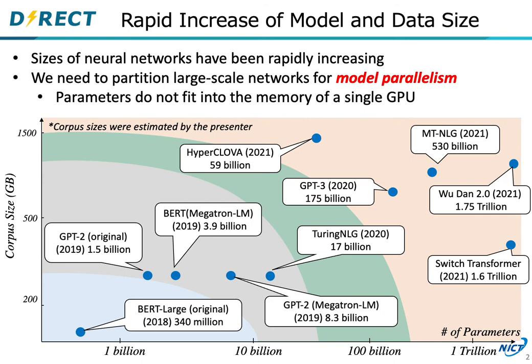In the area of deep learning, the sizes of neural networks have been rapidly increasing. To train extremely large networks like GPT-3 and MT-NLG, we need to partition them for model parallelism, since their parameters do not fit into the memory of a single GPU.